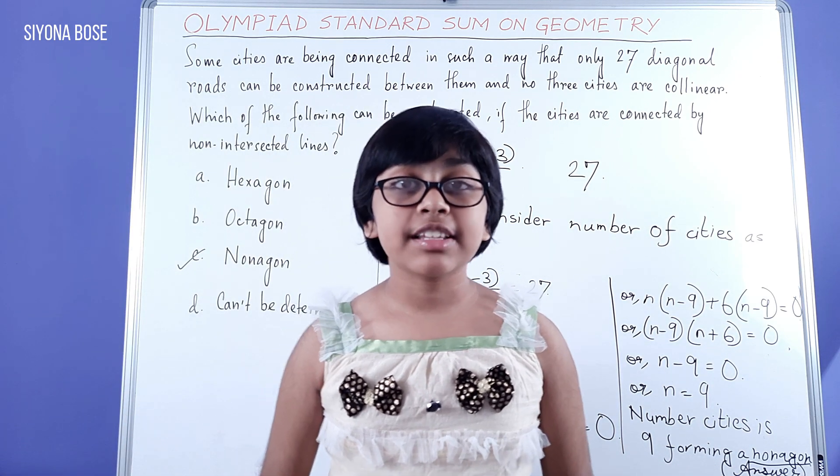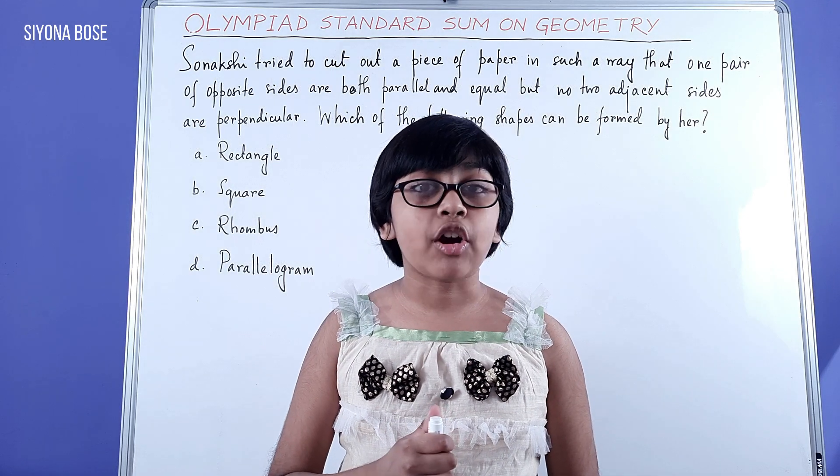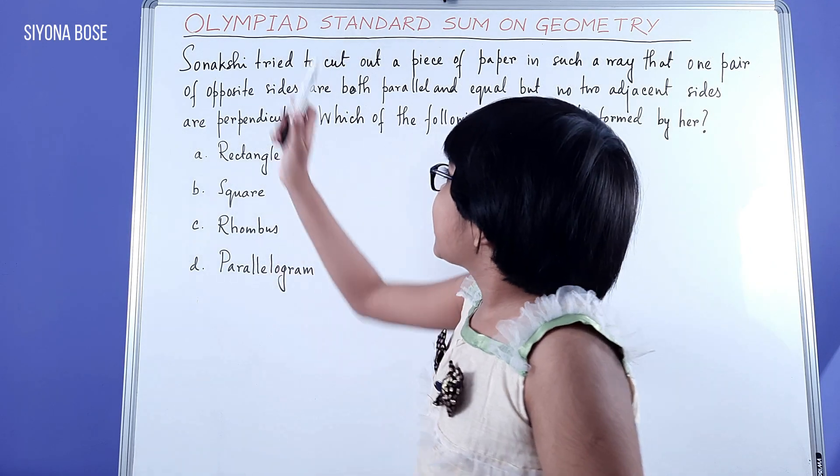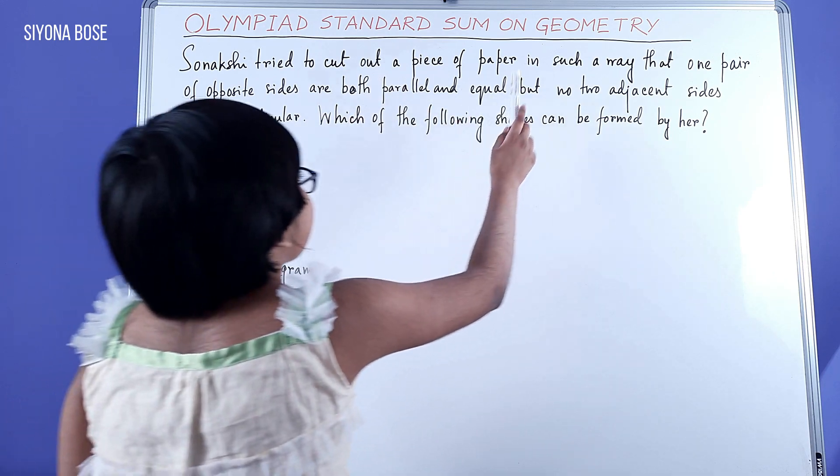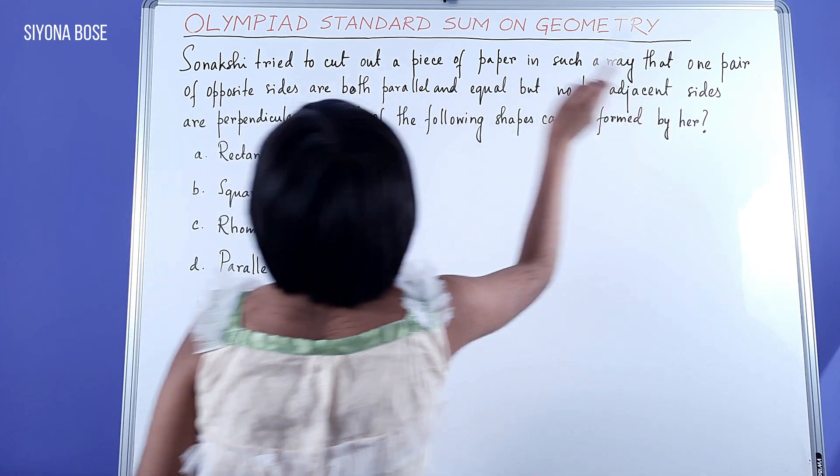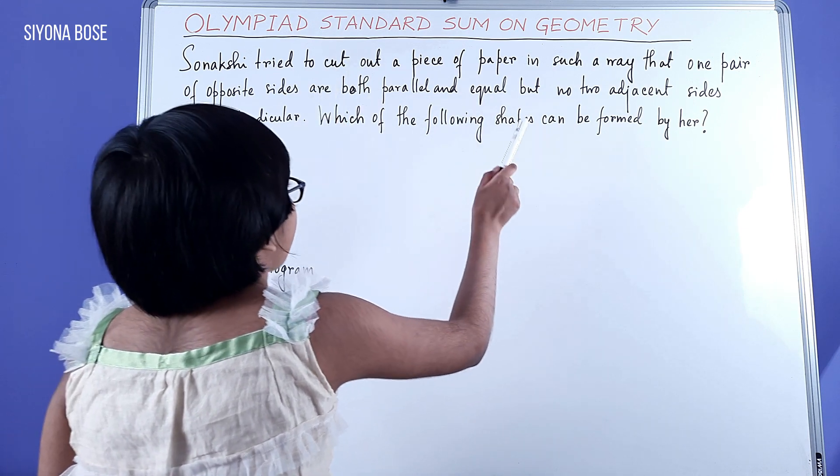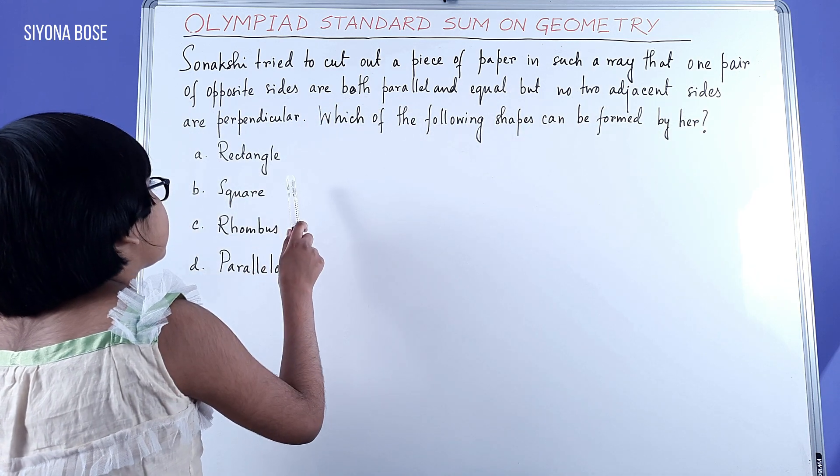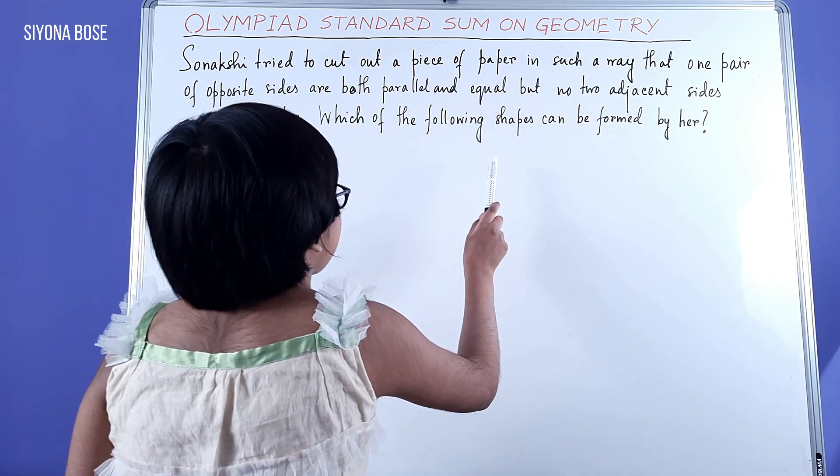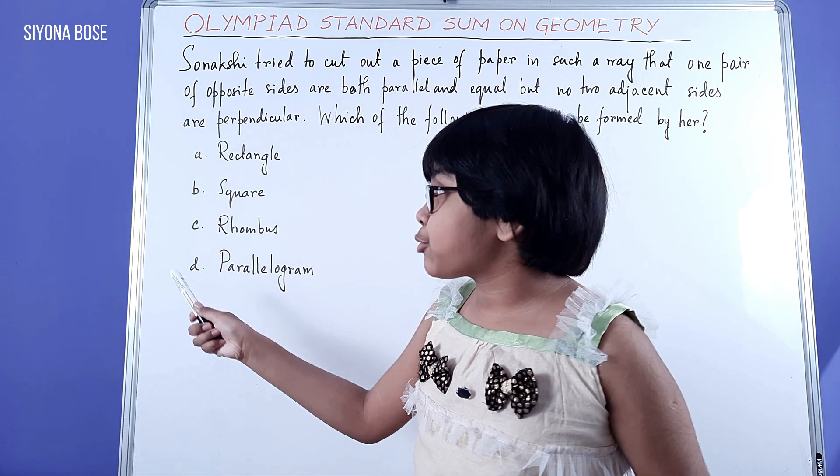Now we will discuss about another sum based on geometry. So Nakshi tried to cut out a piece of paper in such a way that one pair of opposite sides are both parallel and equal, but no two adjacent sides are perpendicular.